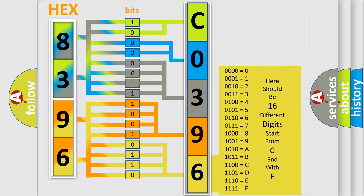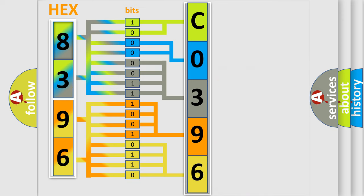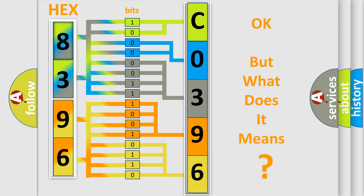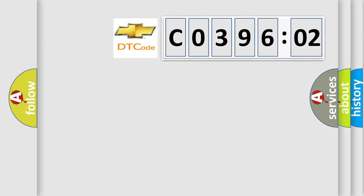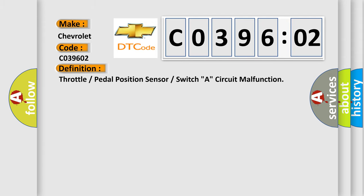We now know in what way the diagnostic tool translates the received information into a more comprehensible format. The number itself does not make sense to us if we cannot assign information about what it actually expresses. So, what does the diagnostic trouble code C039602 interpret specifically for Chevrolet car manufacturers?